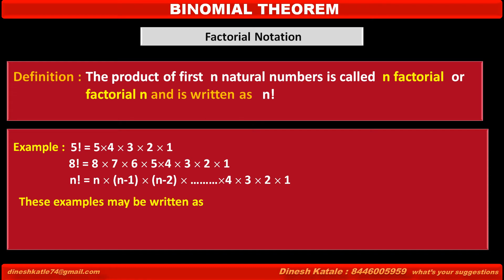These examples may also be written in alternative forms. 5 factorial can be written as 5 × 4!, or as 5 × 4 × 3!, or as 5 × 4 × 3 × 2! — that is, up to any succeeding term in descending order.